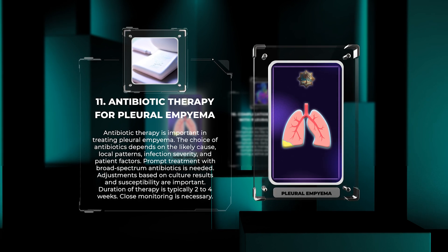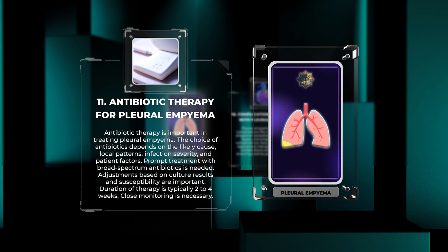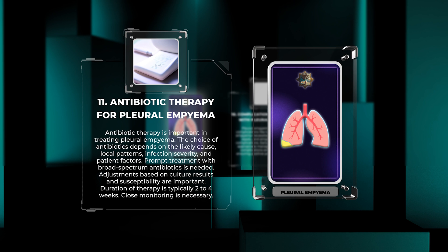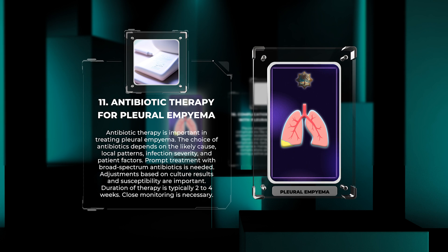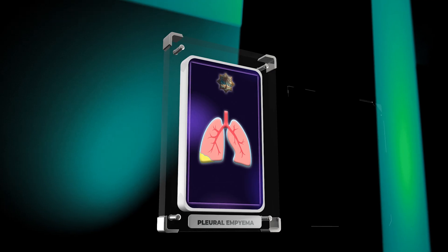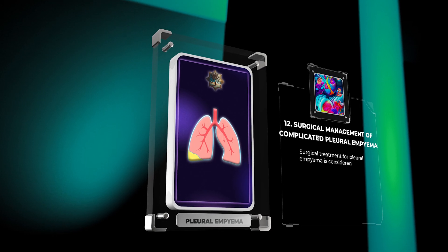Antibiotic therapy is important in treating pleural empyema. The choice of antibiotics depends on the likely cause, local patterns, infection severity, and patient factors. Prompt treatment with broad-spectrum antibiotics is needed, with adjustments based on culture results and susceptibility. The duration of therapy is typically two to four weeks, and close monitoring is necessary.